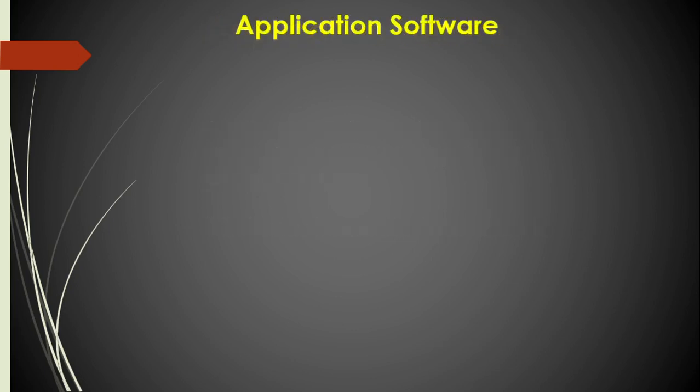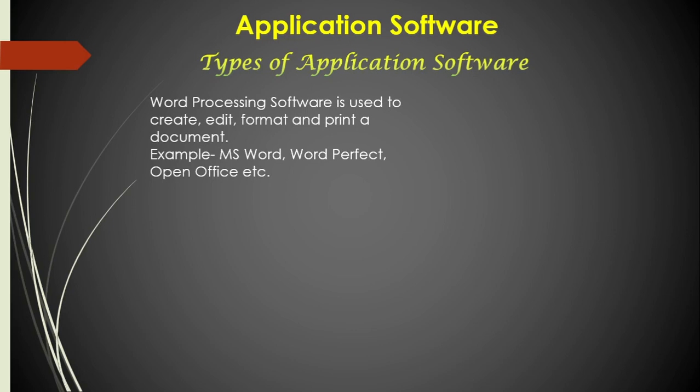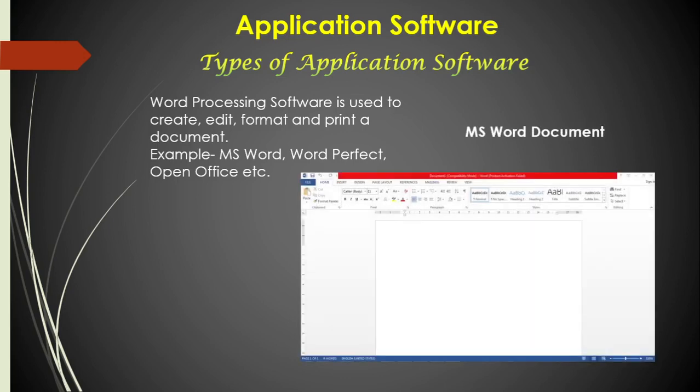Let's learn about some types of application software. The first one is word processing software. It is used to create, edit, format, and print a document. Examples: MS Word, WordPerfect, OpenOffice, etc. Here is the most common word processing software, that is MS Word.